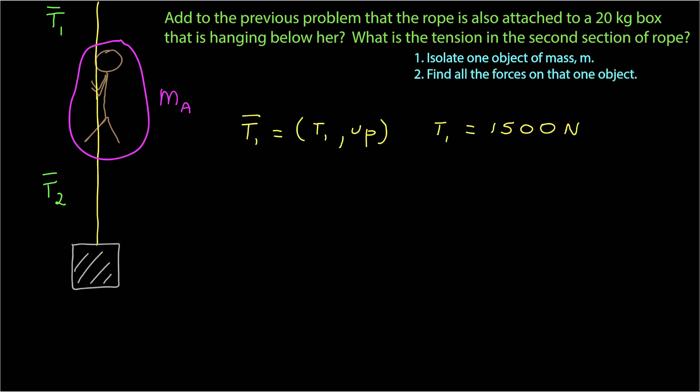Next is to find all the forces on that one object. One of the forces is the tension due to the rope going up — I identify that as T1. It has a magnitude T sub 1 pointing up, and I've identified that I know its magnitude: 1500 newtons. But there are other forces. There's also the tension of the rope going down, identified as T sub 2, with magnitude T sub 2 going down, and I don't know what it is.